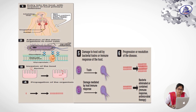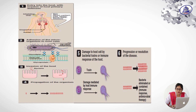Then adhesion of the microorganism to the host cell by pili and capsule, followed by invasion of the host and propagation of the organism — one microorganism produces multiple microorganisms. This ultimately causes damage to the host cell by bacterial toxin or immune response. The bacteria produce toxin and damage the immune system, leading to progression or resolution of the disease.